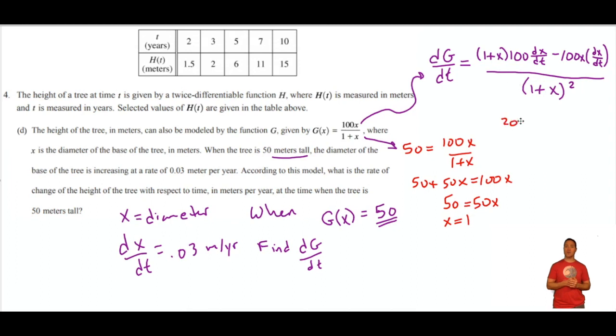So 1 plus 1 is 2. So I get 200 dx dt minus 100 dx dt. And I can plug in 0.03 for dx dt. I was given that. So that's just going to be 3 up there if you can follow that math. 200 minus 100 is 100 times 0.03 is 3. So I get 3 fourths. So dg dt, the rate of change of the height of the tree, when the tree is 50 meters tall, is 3 fourths meters per year since it was a rate of change, dg dt. And that's the answer.